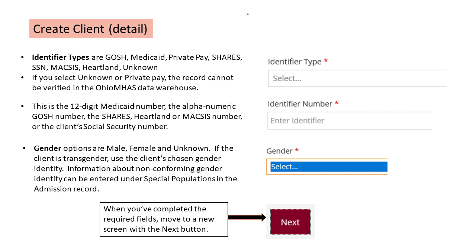The identifier number must be one of the following: a 12-digit Medicaid number (not the managed care case number), an alphanumeric GOSH identifier, a Shares, Heartland, or McSys number, or a Social Security number. You will not be able to enter a number into this field if you selected private pay or unknown as your identifier type. Gender options are male, female, and unknown. If the client is transgender, use the client's chosen gender identity. Information about non-conforming gender identity can be entered later under Special Populations in the admission record.